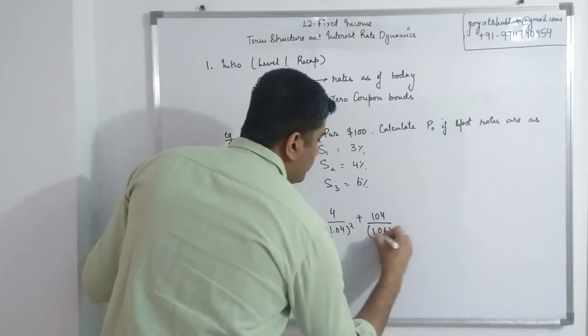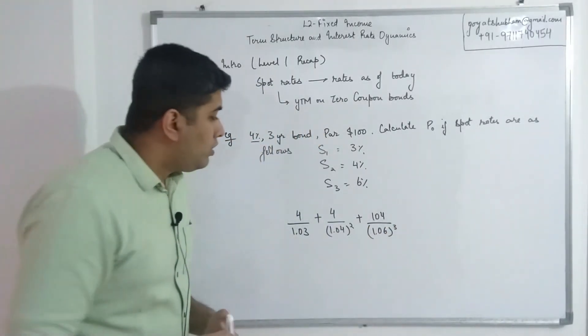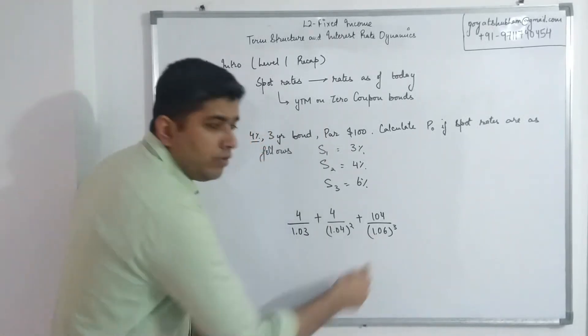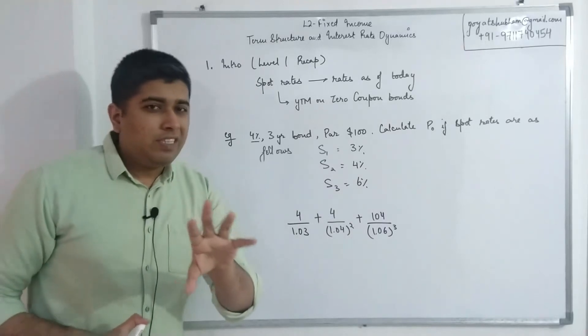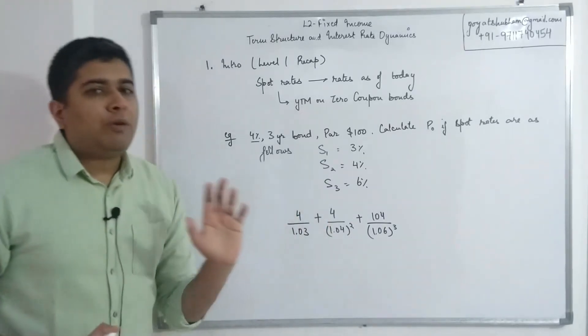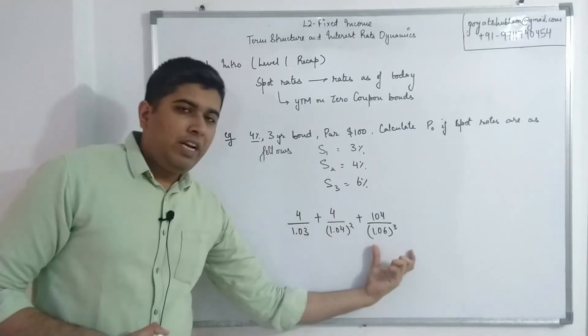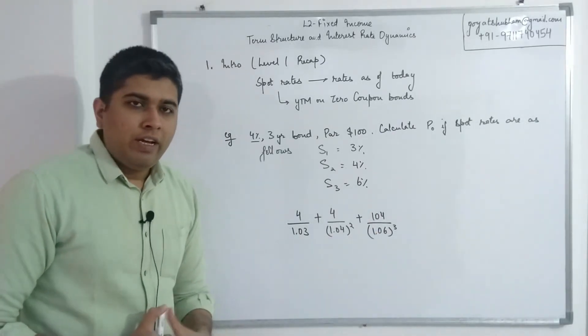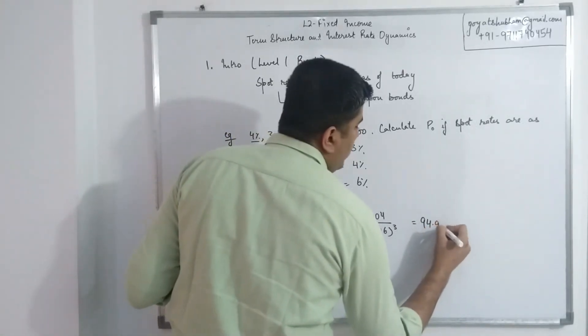Plus, at the end of third year you'll receive the third year's coupon plus you'll also get your $100 back, so 104 divided by 1.06 to the power 3. So at level one instead of having different discount rates you used to have one single rate and you used to do same process. The only difference is that with this equation you won't be able to solve it in one go in the calculator - you'll have to calculate three values separately and then add them up manually. So give it a try. When you solve for this you'll get a value of $94.90 approximately.